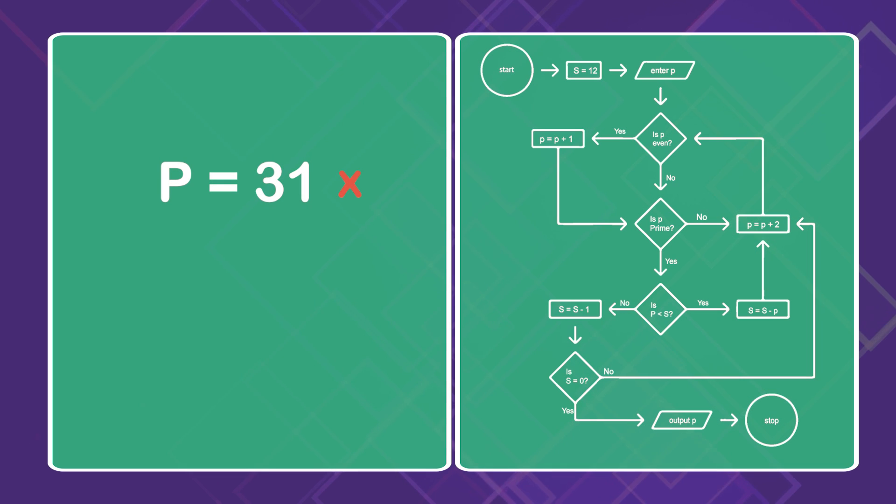Reject p equals 31. It's too big. Even p equals 12 will not work. That's even, so immediately it will be nudged up to p equals 13 at the very beginning. And then it's already bigger than s. That doesn't work.